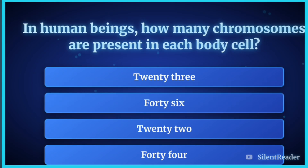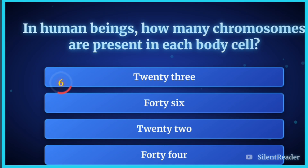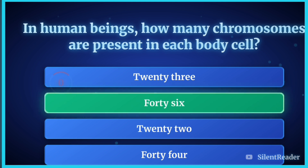In human beings, how many chromosomes are present in each body cell? The correct answer is 46.